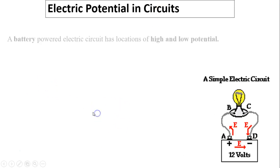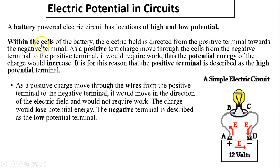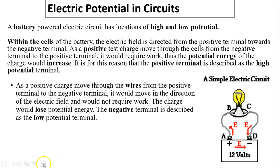Electric potential in the circuit. A battery-powered circuit requires work — the battery does work on the charge to move it from negative to positive. When an electron has energy, it can do work to light up a light bulb and so forth. This leads into the next topic we'll learn: circuit electricity. That's it for today — thanks for watching, see you next time.